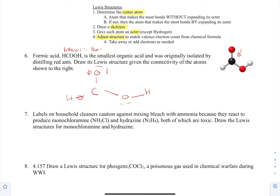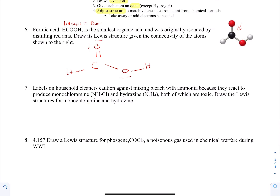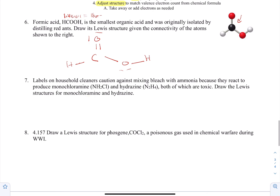When we get into formal charge, you'll learn that the lone pair on oxygen comes down to make a double bond with carbon to minimize formal charge — we'll get to why that happens in the next problem set. That's the final answer for formic acid.